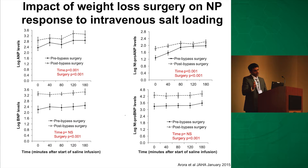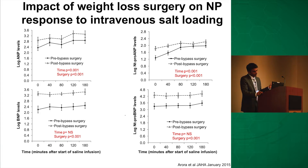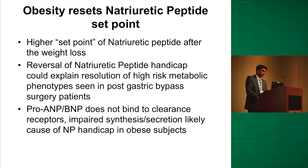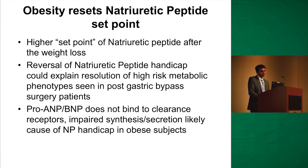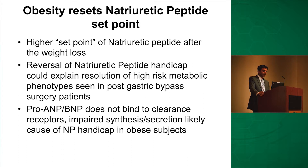We had improvement in relaxation after surgery. All four NPs — both mature peptides and N-terminal pro peptides — went up after bypass surgery. The top panel is post-bypass and the bottom line is pre-bypass. This tells us there is a higher set point of natriuretic peptide after weight loss. Reversal of natriuretic peptide deficiency in obese patients could explain the resolution of the high-risk metabolic phenotype seen post-gastric bypass. More importantly, pro-ANP and pro-BNP do not bind to the clearance receptor, which alludes to the fact that impaired synthesis or secretion — rather than just clearance — could be the cause of the deficiency in obese subjects.